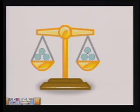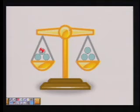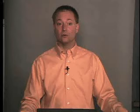Looking at this scale, you can see it's balanced because there are three balls on each side. If I were to take away a ball from one side, it wouldn't be balanced unless I took a ball away from the other side. Now again, the scale is balanced. That's the same thing we're going to do with equations.